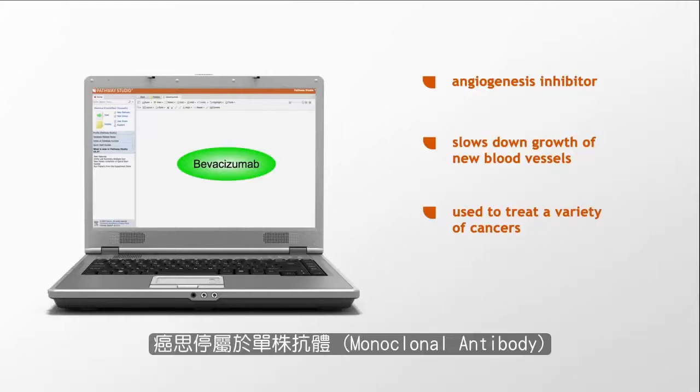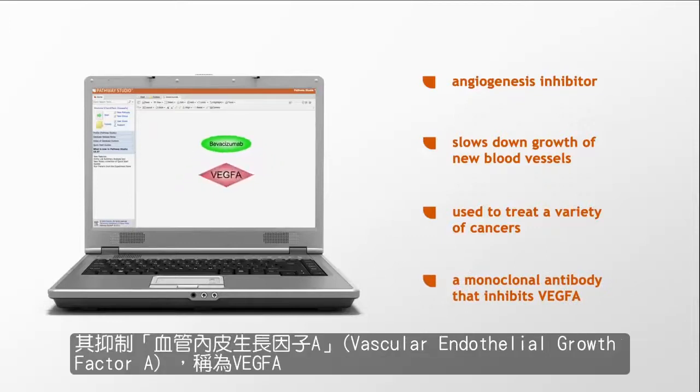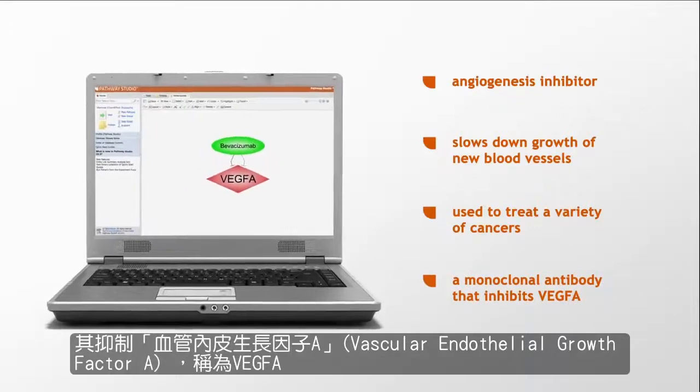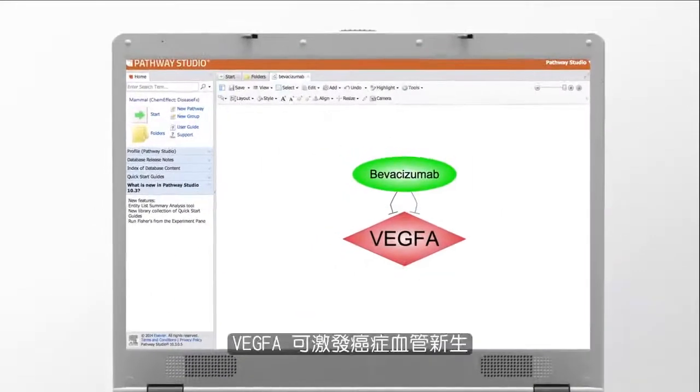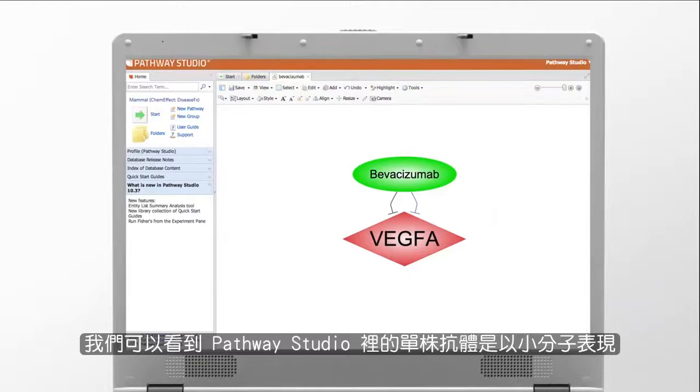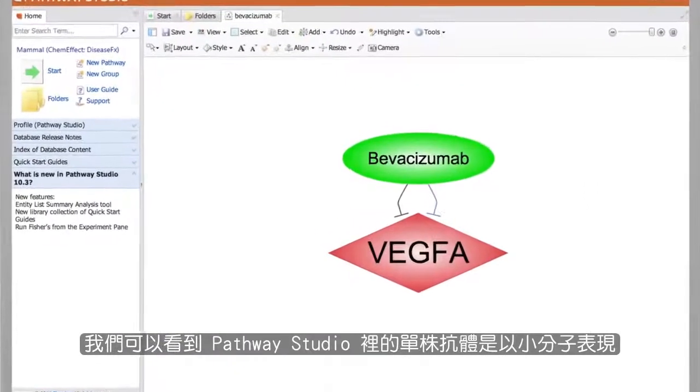Bevacizumab is a monoclonal antibody that inhibits vascular endothelial growth factor A, called VEG-FA. VEG-FA stimulates angiogenesis in cancer. Here we see that in Pathway Studio, monoclonal antibodies are represented as small molecules.